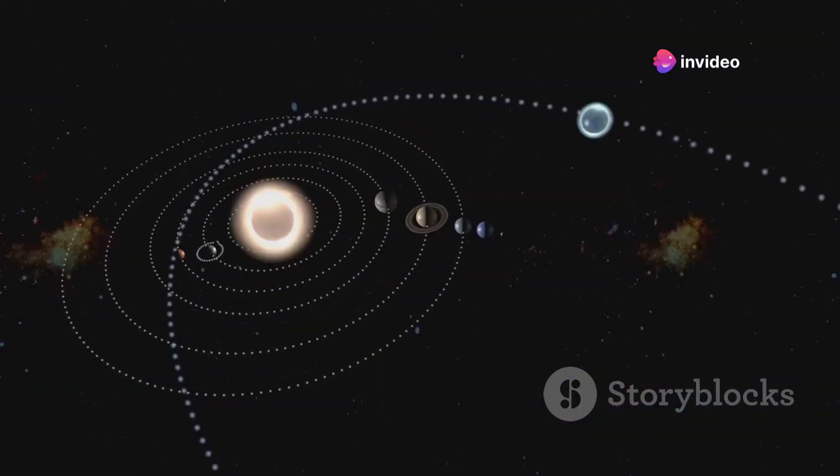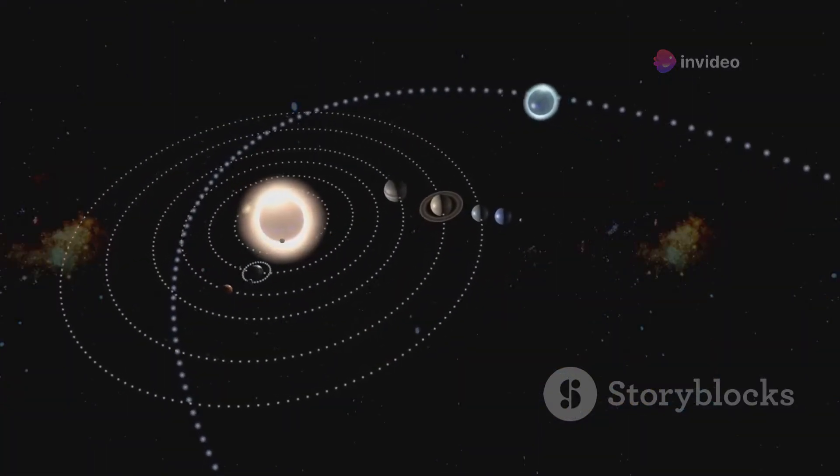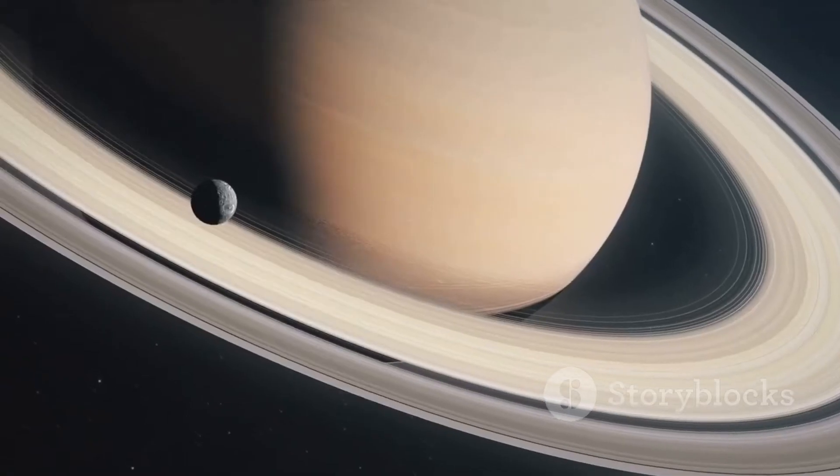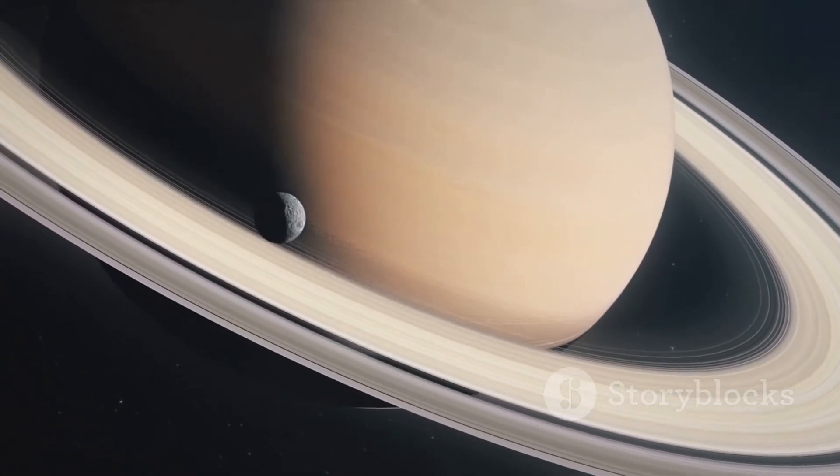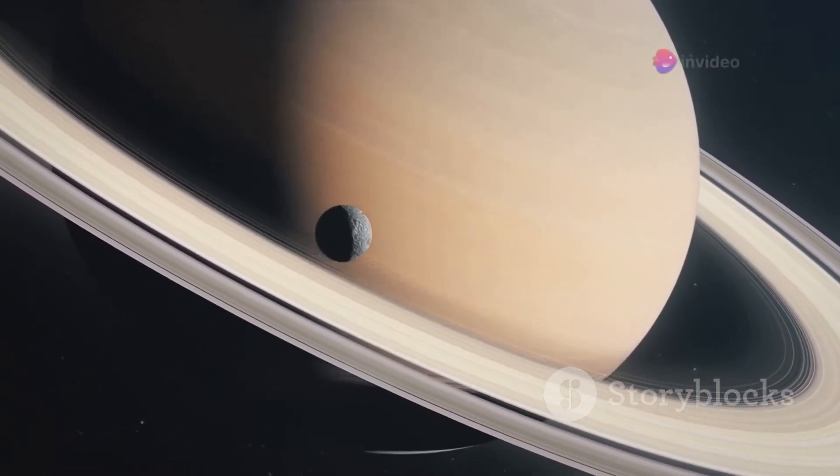Mars, Venus, and even the gas giants might find themselves spiraling into new paths, some potentially more elliptical, others perhaps thrown into chaos or even ejected from the solar system entirely.